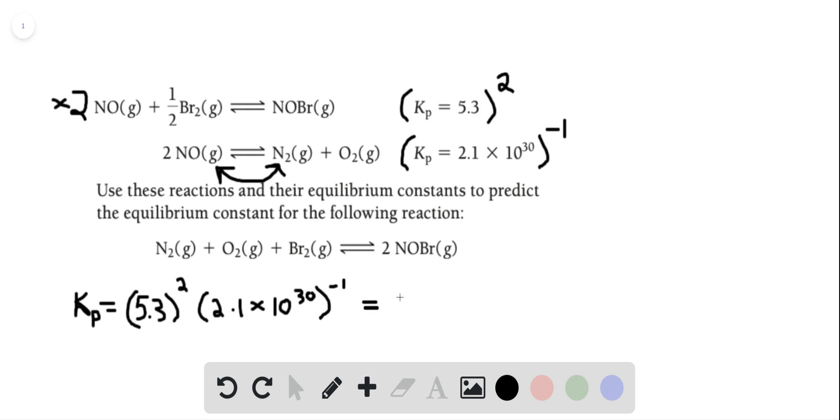If you multiply those together, you get a final answer of about 1.3 times 10 to the negative 29th.